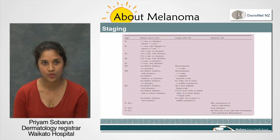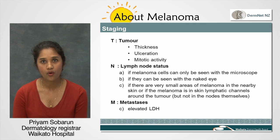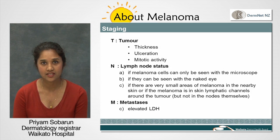Melanomas are staged according to internationally recognised stages. The current staging system is called TNM staging. T represents the thickness of the melanoma. N represents the number of lymph nodes involved with the melanoma. M represents the presence of spread to other organs or elevation of a chemical made by the liver called lactate dehydrogenase. The higher the T, N, and M components, the higher the stage and the worse the outcome.